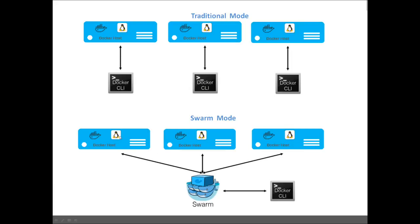In swarm mode, if a particular host dies, the swarm manager automatically checks the status, sees that the host is not responding, and starts a similar container on a healthy node. Swarm picks which node to use by checking the load on existing systems and the affinity rules. You interact with the swarm node using CLI or API — this is the key difference between traditional mode and swarm mode.